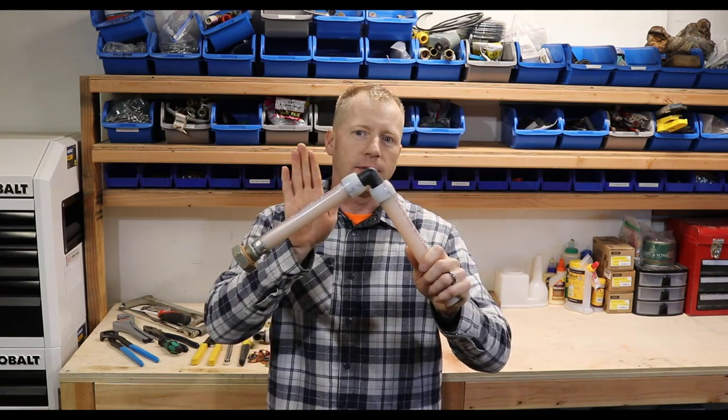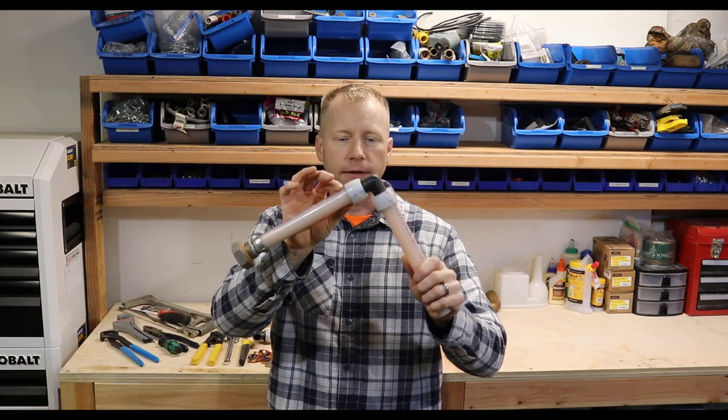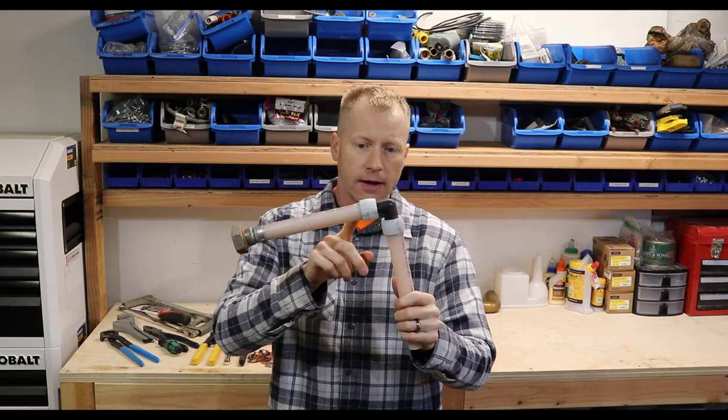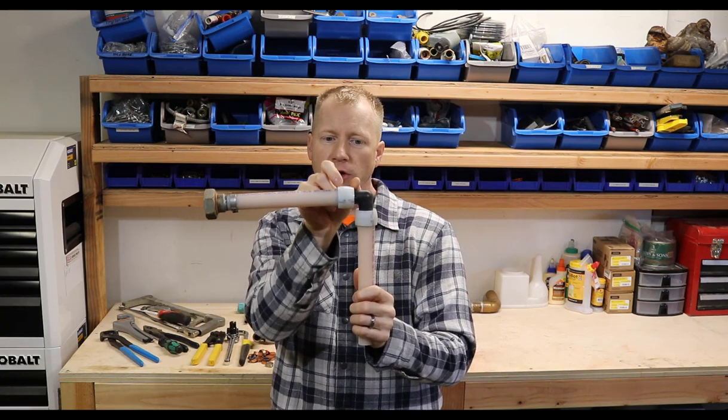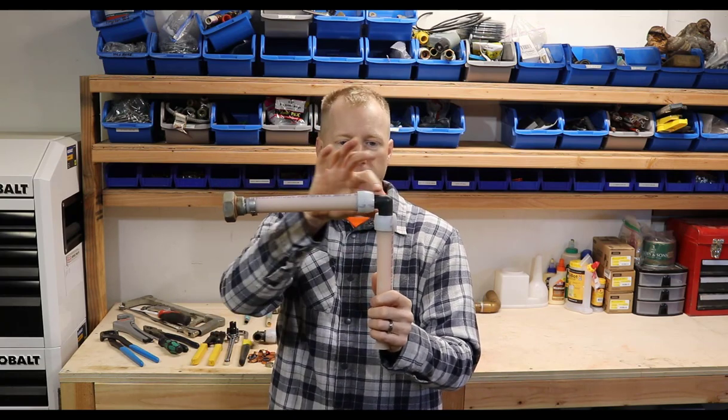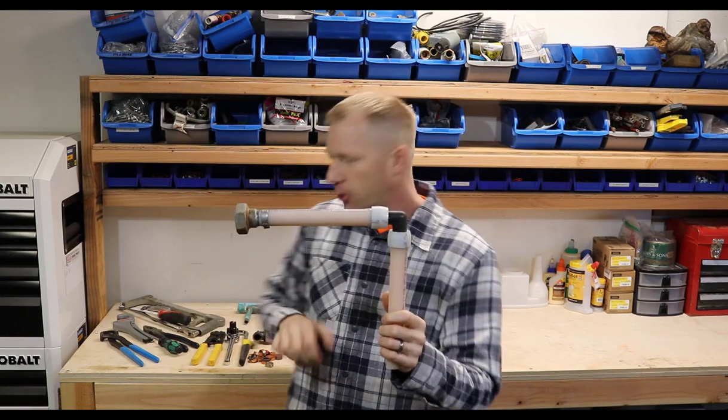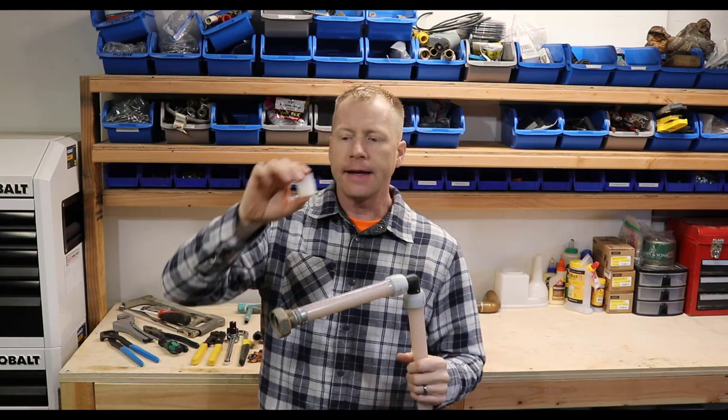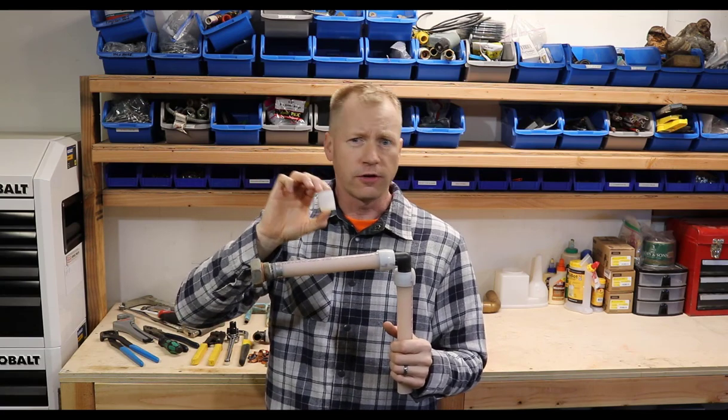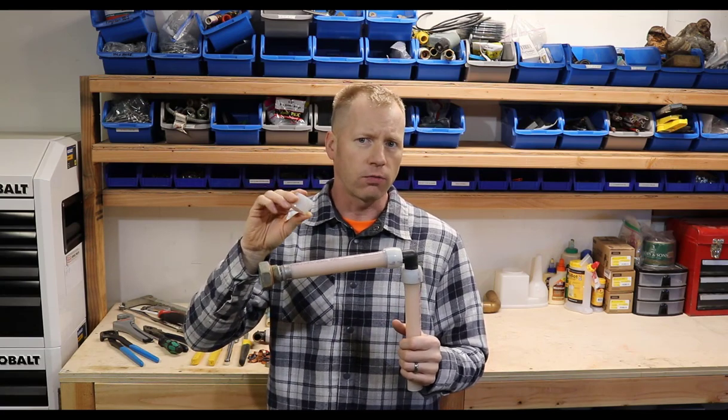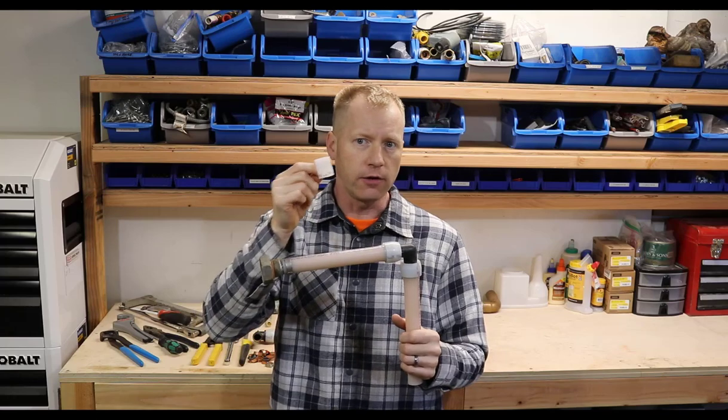So one of the first types of fittings that you may run into with a crimp on it is a Propex type fitting. Basically what it looks like is your PEX tubing with another small, slightly larger diameter piece of PEX over the top of it. This is a Propex fitting and this is not something that a typical homeowner, do-it-yourselfer, or even general remodeler, handyman will use.